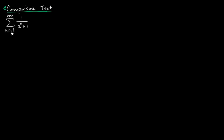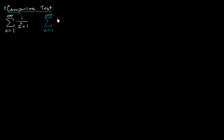We've already seen this. We want to prove that the infinite series from n equals one to infinity of one over two to the n plus one converges. Each of these terms are greater than or equal to zero, and we can construct another series where each of the corresponding terms are greater than each of these corresponding terms. The other series that would likely jump out at most folks would be one over two to the n.